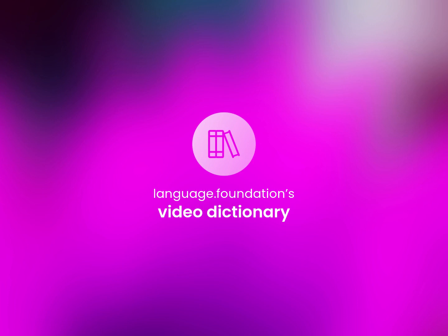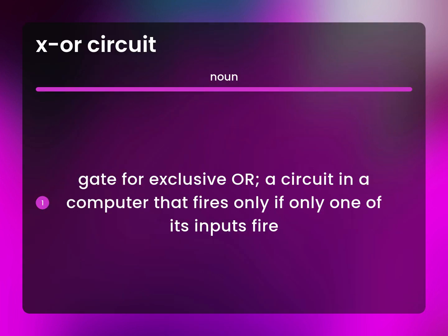Language.Foundation's Video Dictionary, helping you achieve understanding. Gate for Exclusive OR: a circuit in a computer that fires only if only one of its inputs fire.